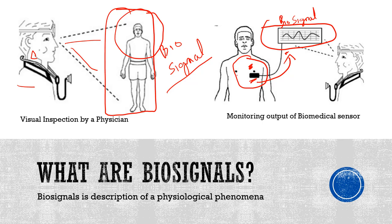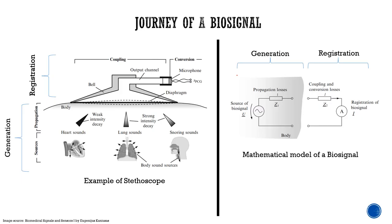Let's look into the journey of a biosignal. There are two major parts: the generation and the registration. In generation we have various sources like heart sounds, lung sounds, and snoring sounds — our body has all these sound sources which produce various signals. In this setup, we have a stethoscope which is recording all kinds of sounds.